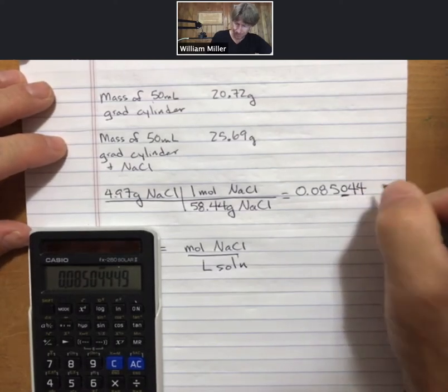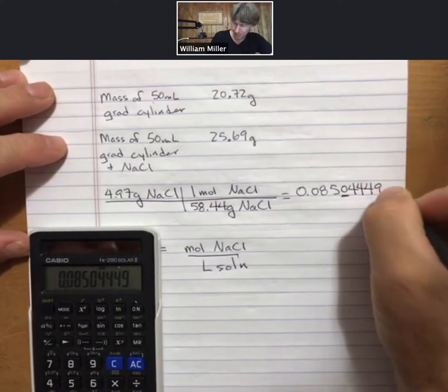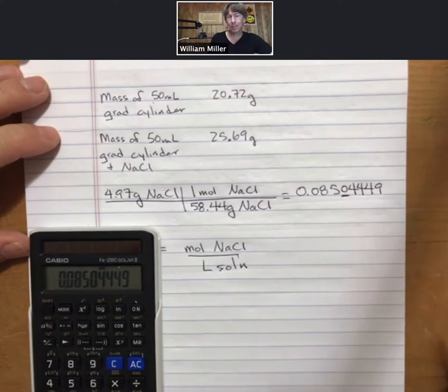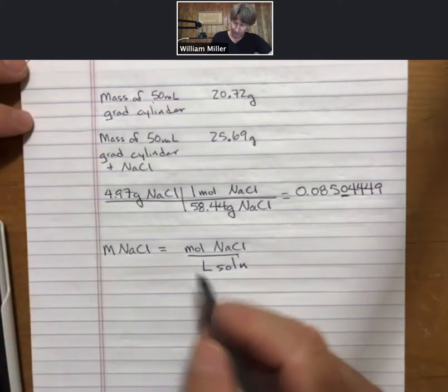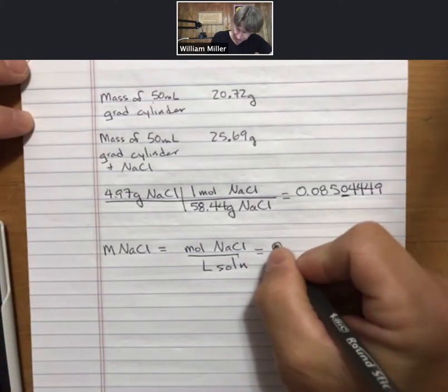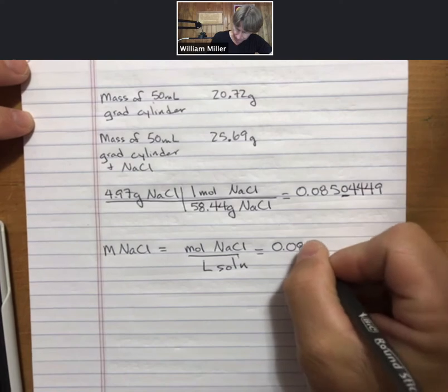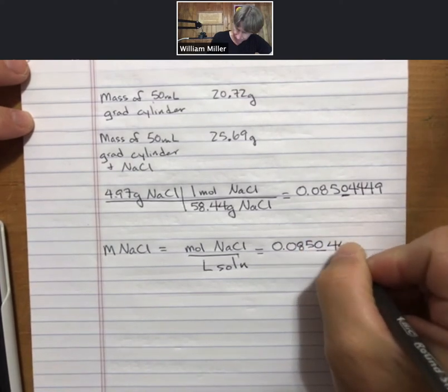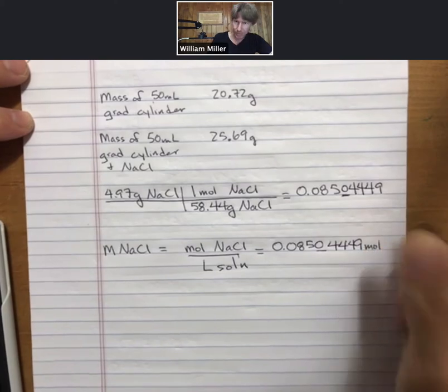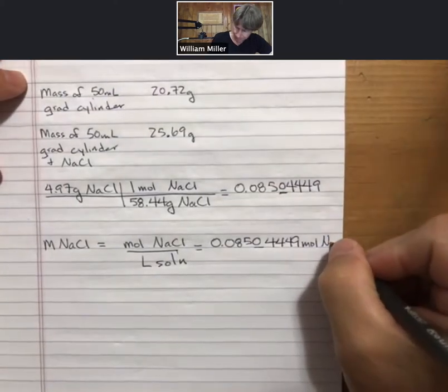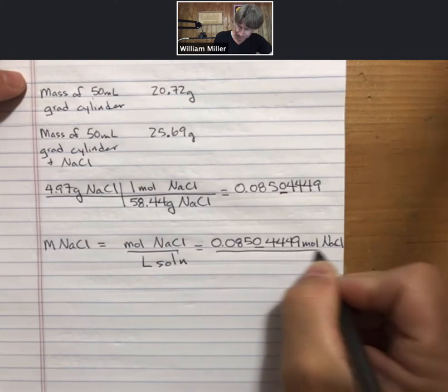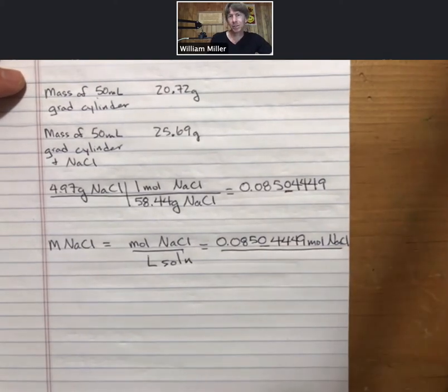I will carry two more, actually I might as well carry them all, carry them all, but now I know that my answer has three sig figs. Next part. Now when I was creating this solution I had a total volume in my 50 milliliter grad cylinder of 50.0 milliliters.